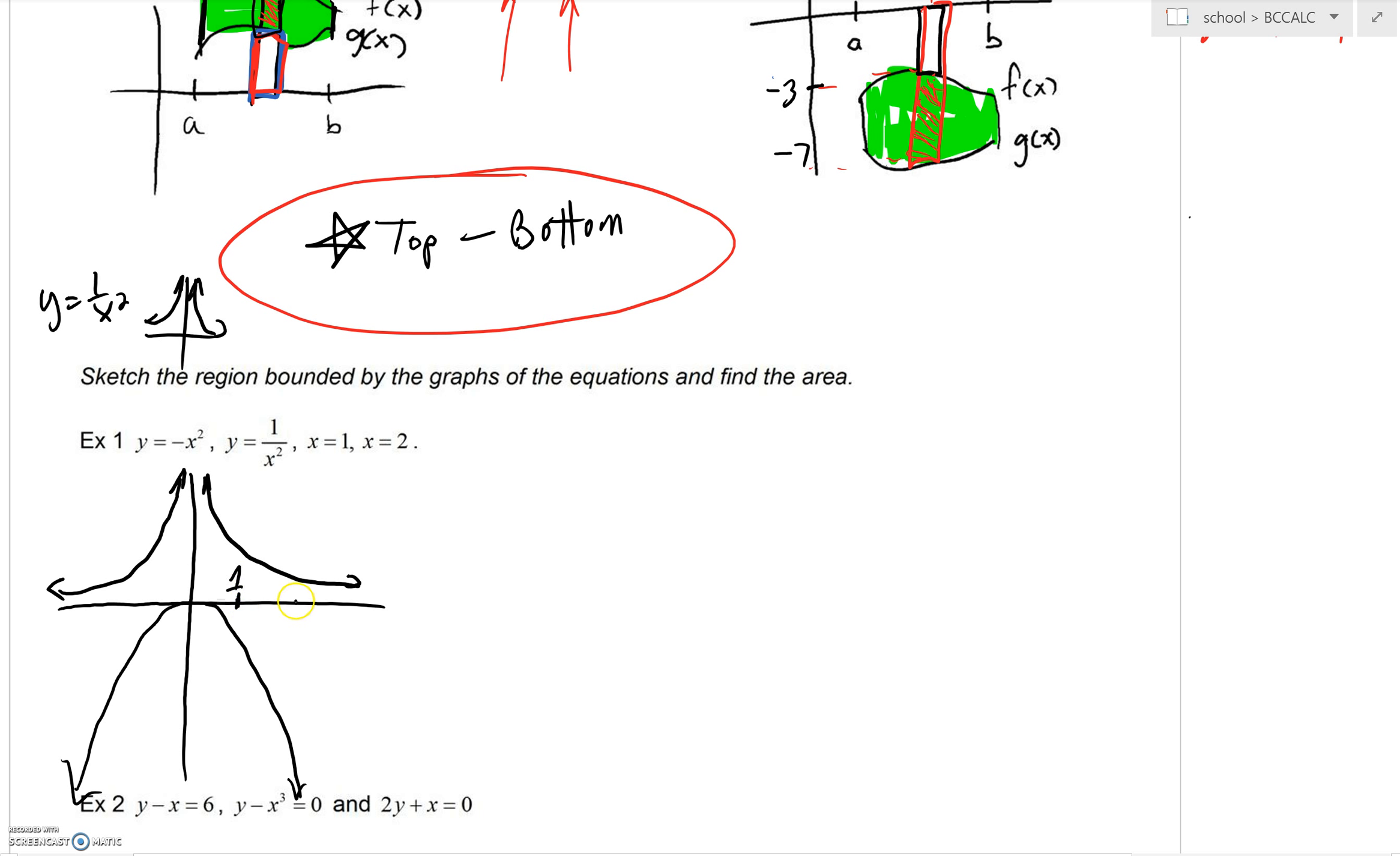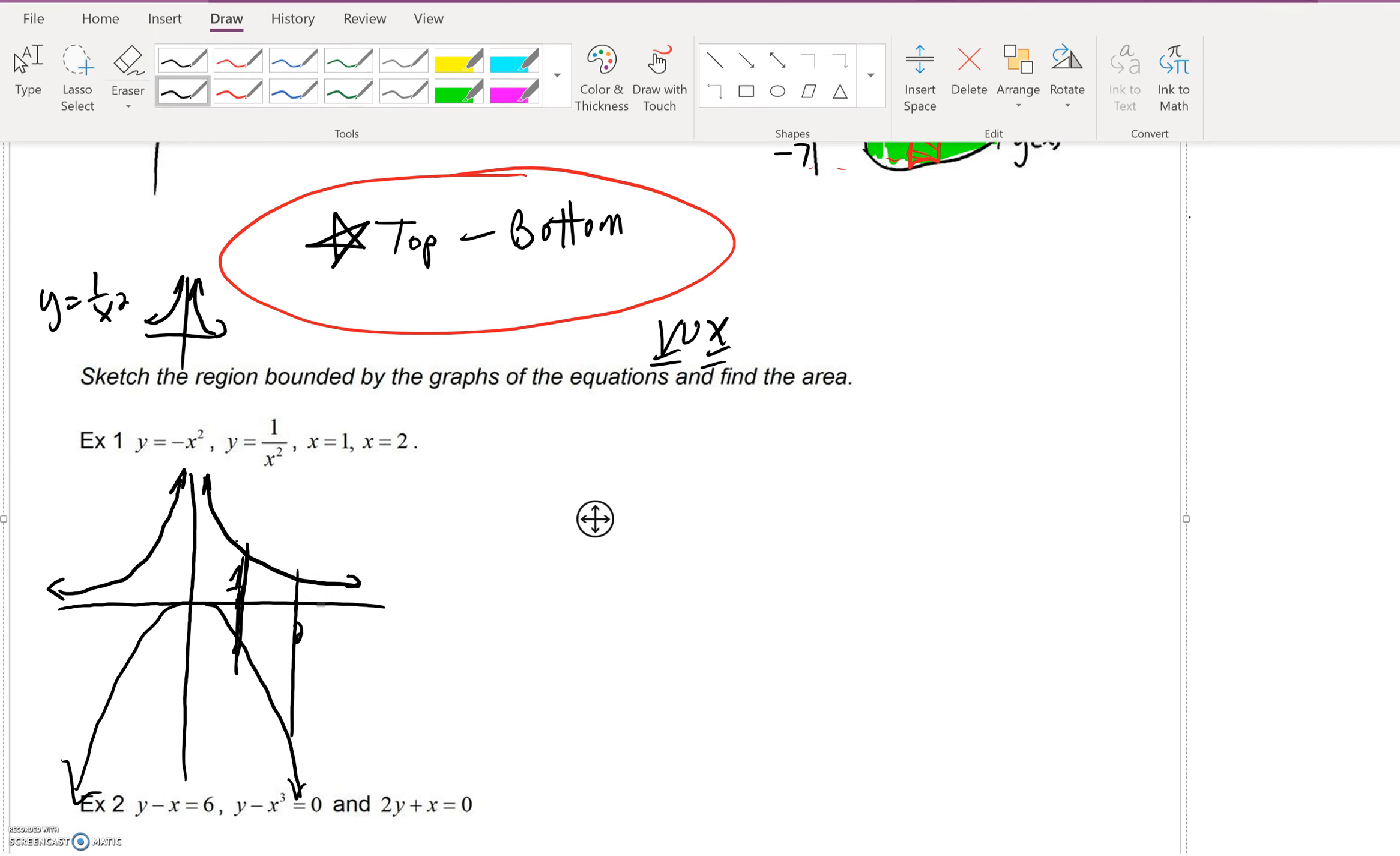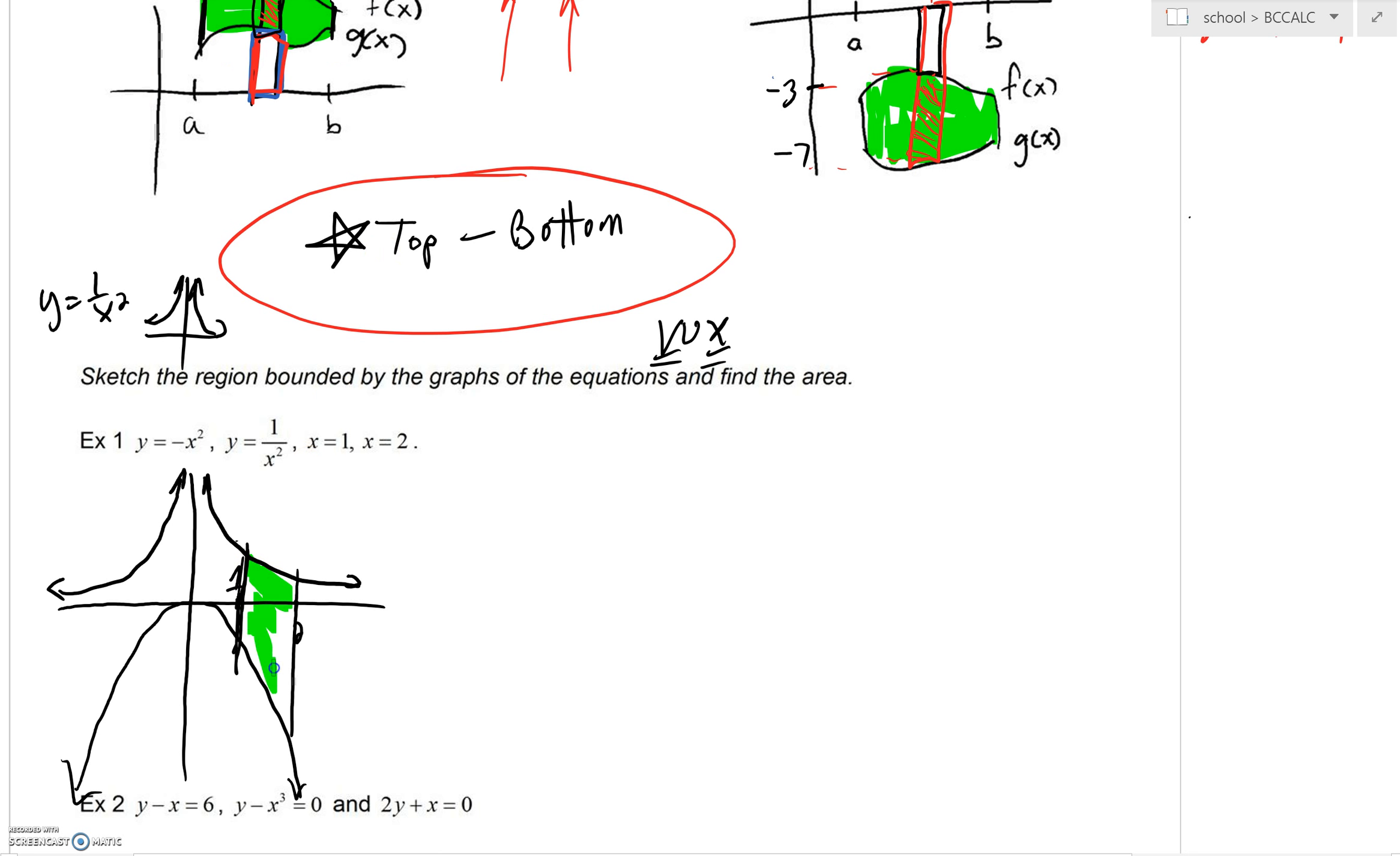We're going to be going from one out to two. X equals one is a vertical line, x equals two is right over here. You can see very quickly that we have area enclosed. How do we go about calculating the area between? Well, our x values go between one and two. What's your top function? You can see that's your one over x squared. We're going to say minus, what's your bottom function? That's negative x squared.